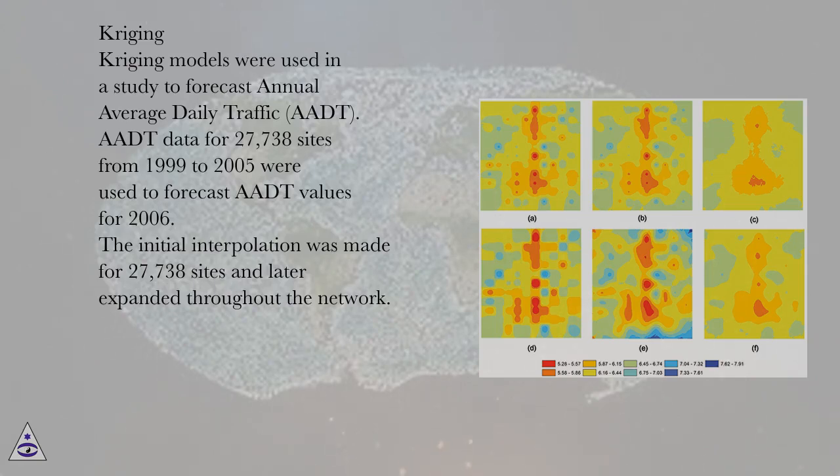Kriging models were used in a study to forecast annual average daily traffic, AADT. AADT data for 27,738 sites from 1999 to 2005 were used to forecast AADT values for 2006. The initial interpolation was made for 27,738 sites and later expanded throughout the network.